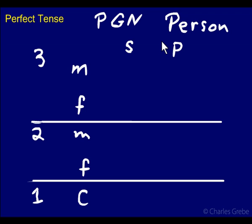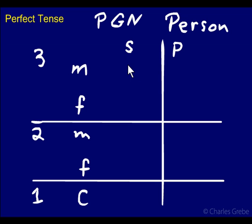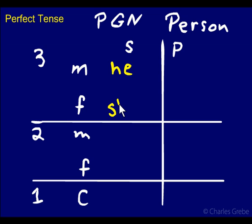We'll just do our translation here quickly. Third masculine singular is 'he' — so 'he ran,' a verb that would have 'he' as a subject. We'll see that the subject is embedded right into the verb. The ending, in this case for the perfect, will indicate that it's 3MS. Third feminine singular would be 'she.' He could also be 'it,' and she could be 'it' if you're talking about an inanimate object that is masculine or feminine.